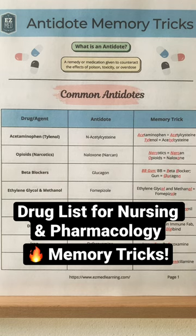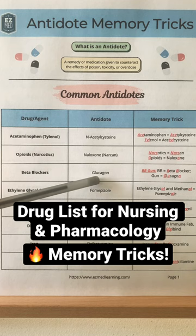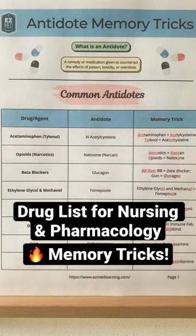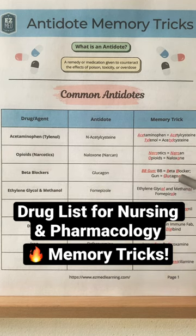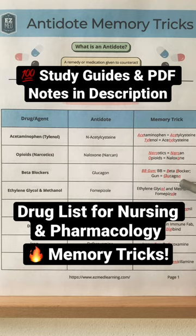Moving on to beta blockers, the antidote is glucagon. For this, think of BB-GUN. BB stands for beta blocker and GUN is to remember glucagon.